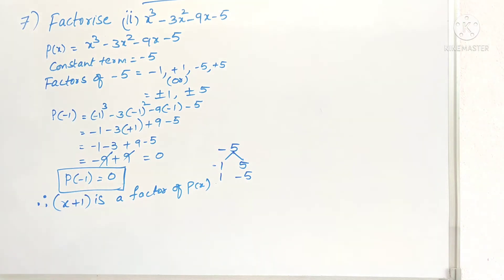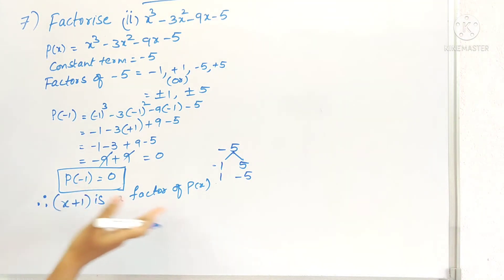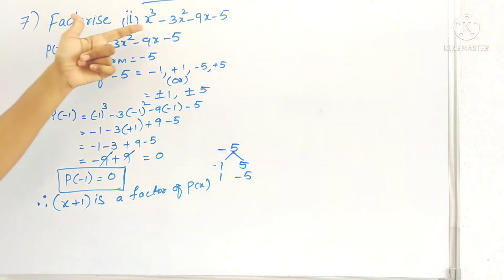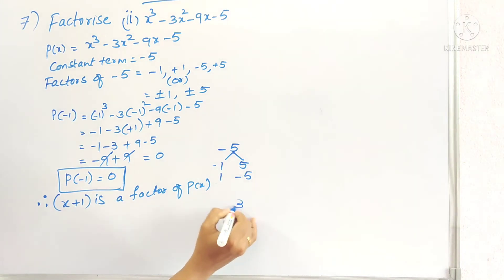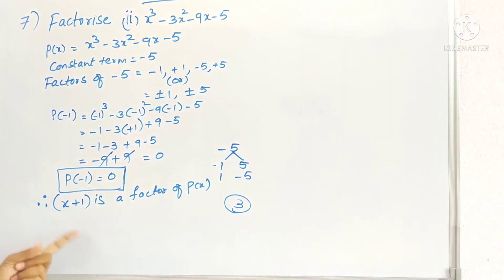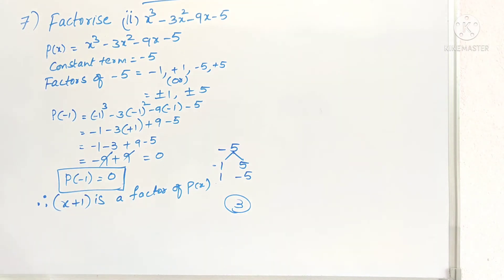By the factor theorem: if P of a is 0 then x minus a is a factor, and if P of minus a is 0 then x plus a is a factor. The degree of this polynomial is 3, so we have to find 3 factors. We already found one factor: x plus 1. The remaining 2 factors we have to find by using division of polynomial.